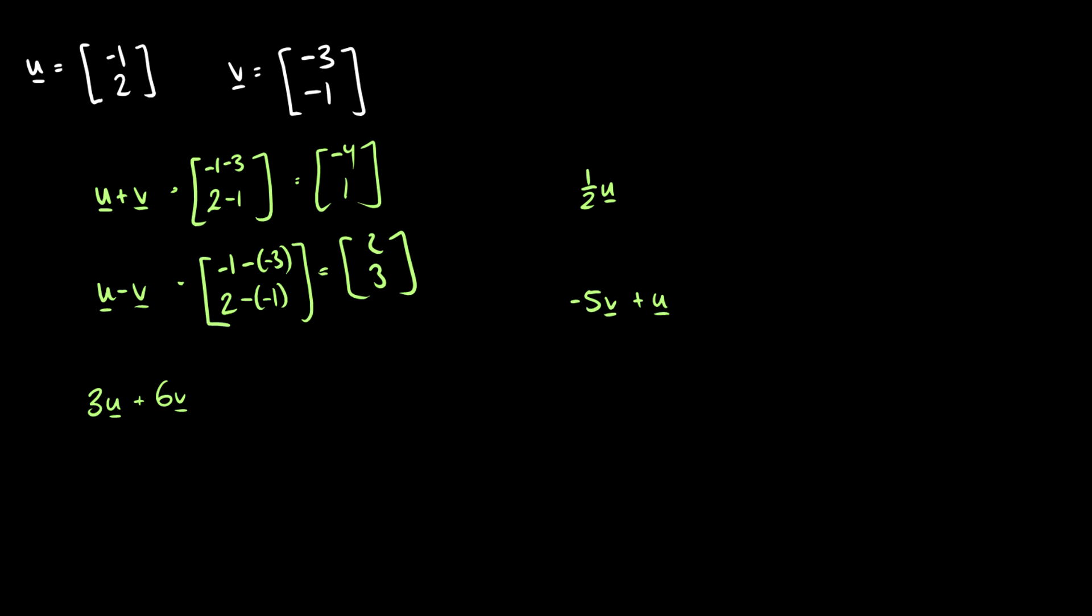What if we take 3u plus 6v? Well, this is going to be negative 3, 6, plus negative 18, negative 6, which will give us negative 21 and 0. So this is just 21 to the left.